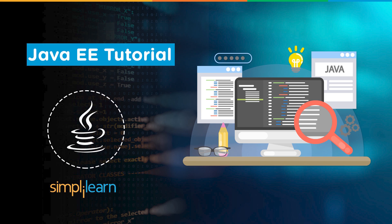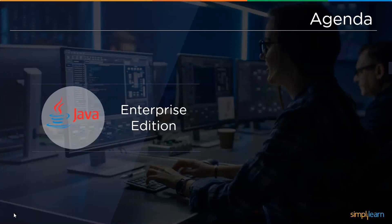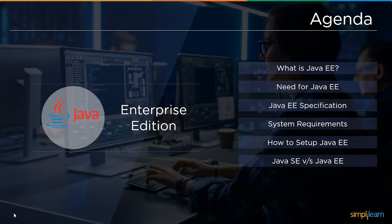Now without further ado, let's quickly dive into the agenda for today's discussion. First, we will understand the definition of Java Enterprise Edition, followed by why we needed it, then the specifications of Java EE, then system requirements, how to set it up locally, and finally the basic differences between Java Standard Edition and Java Enterprise Edition.